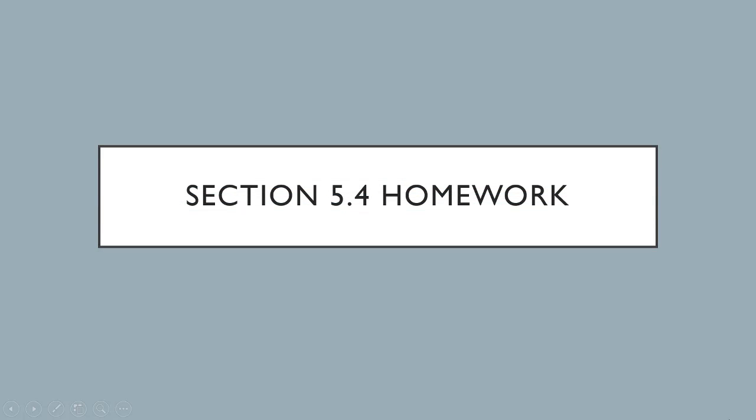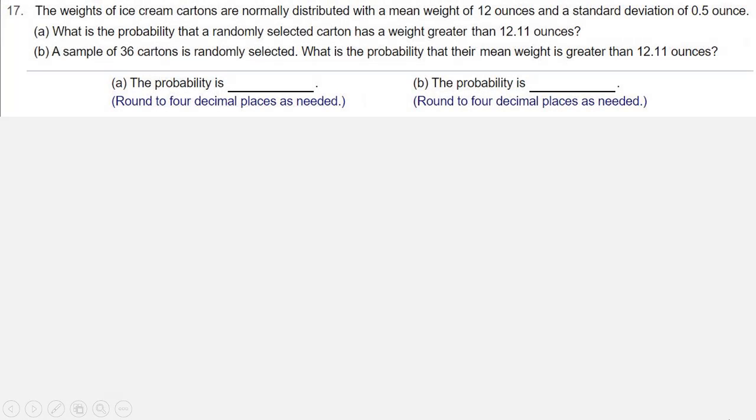We're looking at homework from section 5.4. This is question number 17. The weights of ice cream cartons are normally distributed with a mean weight of 12 ounces and a standard deviation of 0.5 ounce.